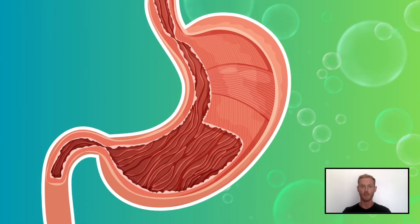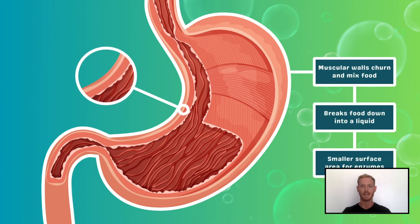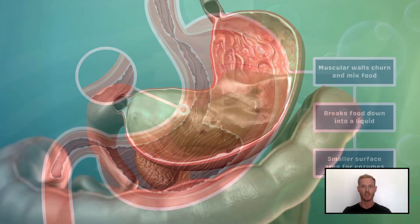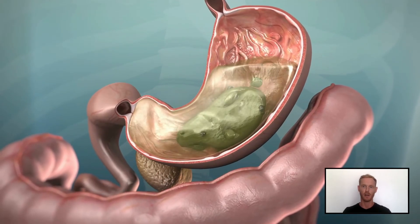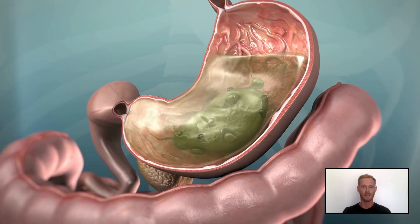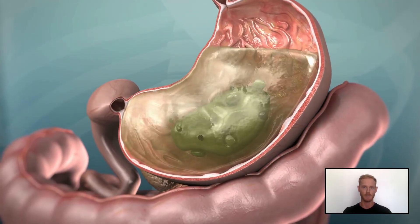You need to be able to describe the role of the stomach in physical digestion. The stomach wall contains layers of muscle that alternately contract and relax, churning and squeezing the food. This mixes the food with gastric juice and helps to break it down into a liquid. Just like chewing, this action increases the surface area of the food so that it can be digested more efficiently by enzymes.